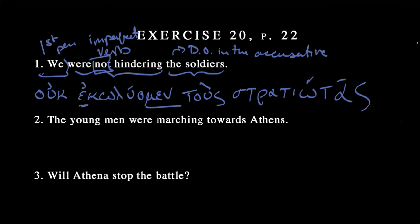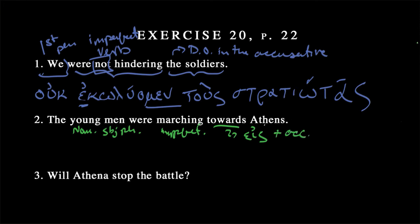Let's do sentence two — a different color to shake things up. "The young men were marching towards Athens." "The young men" is going to be our nominative subject, and it's plural. "Were marching" is again imperfect tense — that's the name of this chapter. "Towards Athens" is a prepositional phrase, and we just covered this: it's class B of masculine first declension nouns, so we have a masculine article. Hoi neaníai — "the young men."